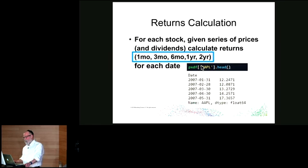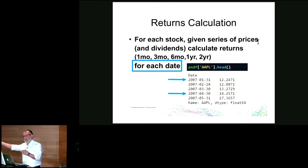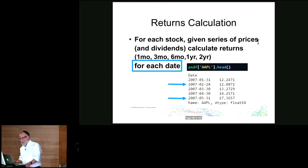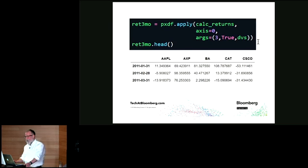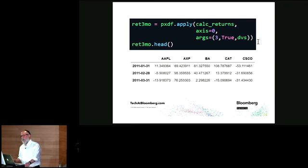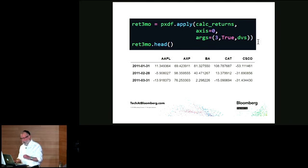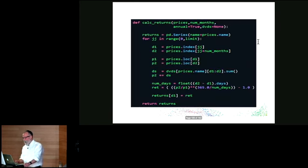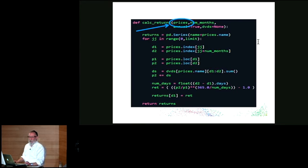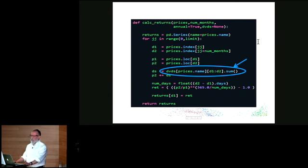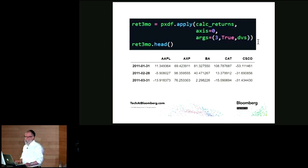For the return calculation across various periods, I go to each date, find the date corresponding to one month, three months, or six months later, get the price for that period, grab the dividends, and add them into the return calculation. There's no built-in return method on a data frame — but there is an apply method, where I write any function and it applies it to every column or every row. Going column by column, I calculate returns for each stock, passing in the prices series as the first argument. I call apply and get back a data frame of returns corresponding to my P/E ratio data frame.